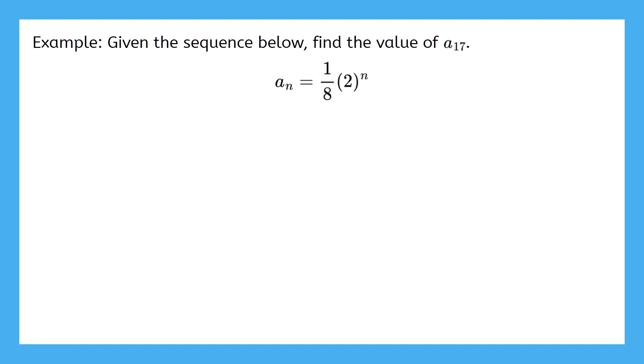Let's try another example. Given the sequence below, a sub n equals 1 eighth times 2 to the n, find the value of a17. The beauty of having a formula like this is that we can just substitute any value in for n. Just 17 here. Pause the video now and give it a try.